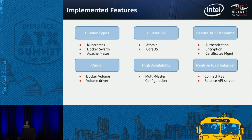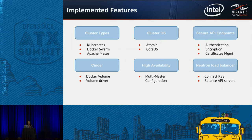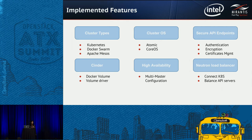The next feature is high availability. Magnum is highly available — you specify the count of master nodes you want in your cluster, for example two master nodes, and Magnum deploys the cluster with those two master nodes plus your specified number of minion nodes. The master nodes are configured with a Neutron load balancer, used to balance the API service like Kubernetes API services. Additionally, for containers running on the cluster that need to be accessible from an external network, the Neutron load balancer provides a virtual IP to the containers.